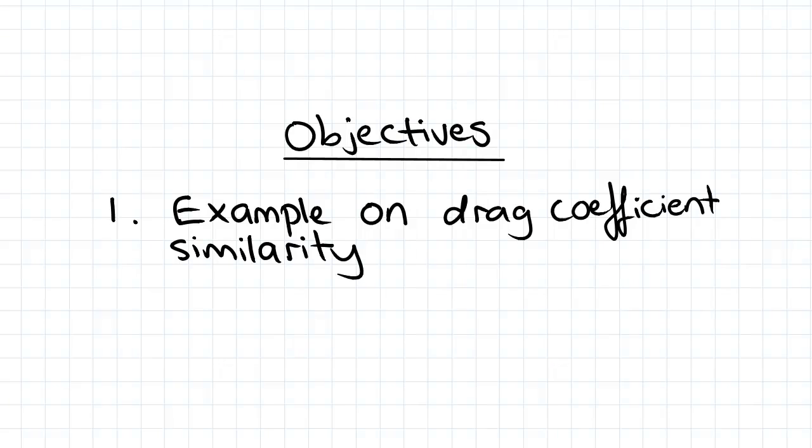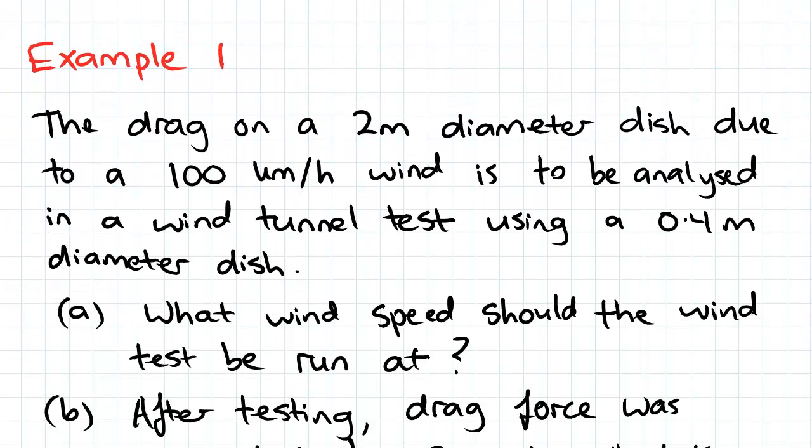Hey guys, in this video we're going over an example on drag coefficient similarity. So here's our example: the drag on a 2m diameter dish due to a 100 km per hour wind is to be analyzed in a wind tunnel test using a 0.4m diameter dish.